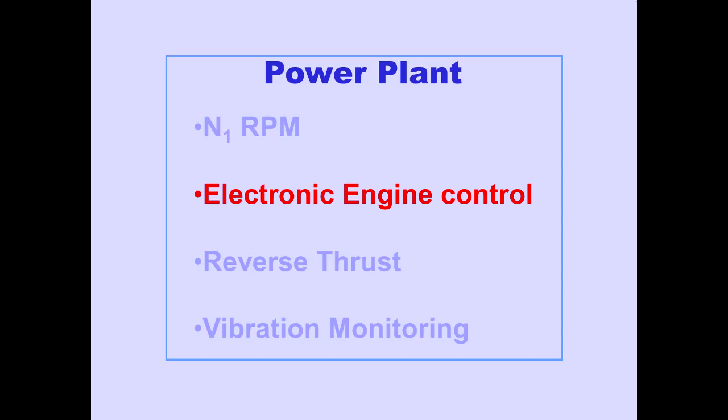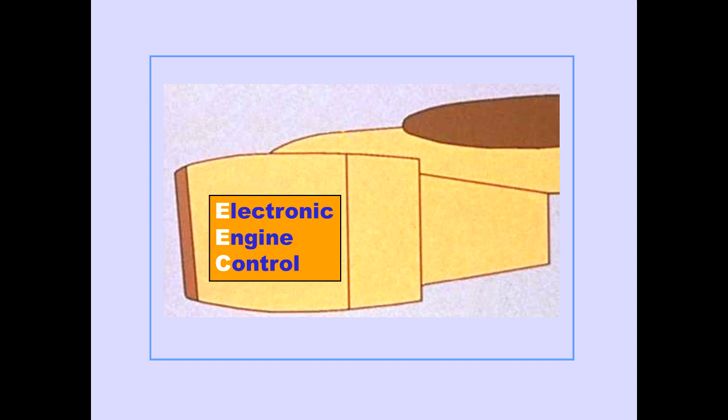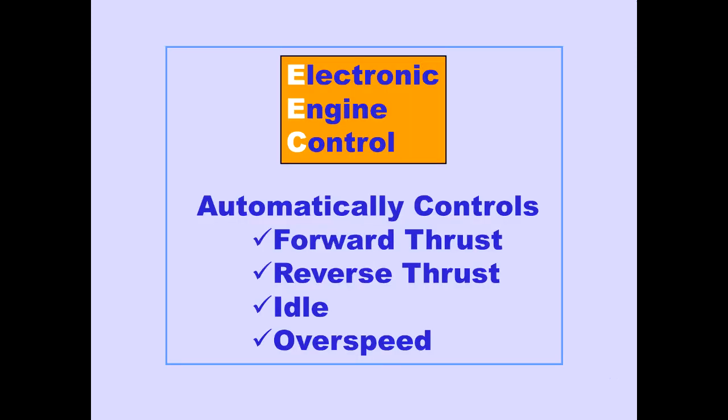Now let's discuss the electronic engine control. The engine control system is an intricate system of sensors and actuators coordinated through the EEC. Each engine has a multi-channel, full-authority digital electronic engine control, or EEC. The EEC automatically controls forward thrust, reverse thrust, idle, and overspeed.